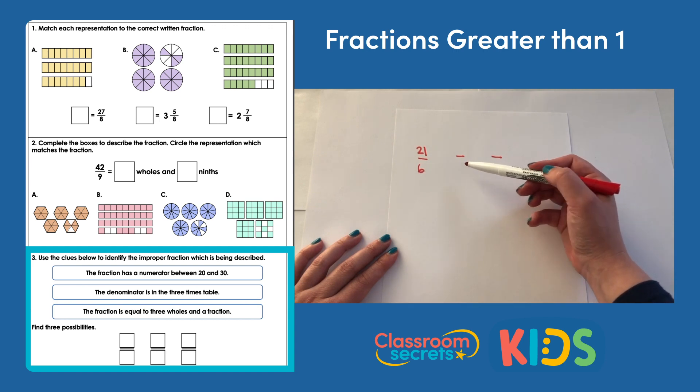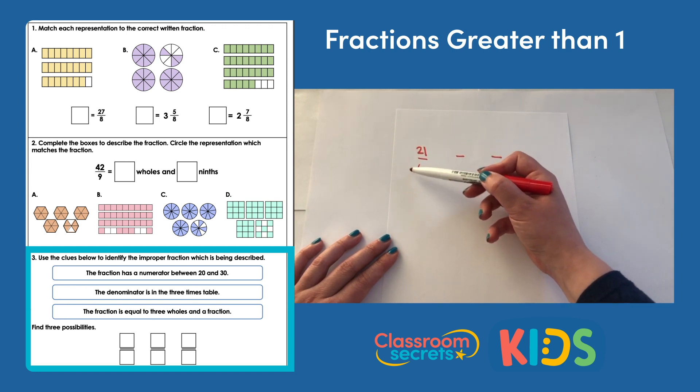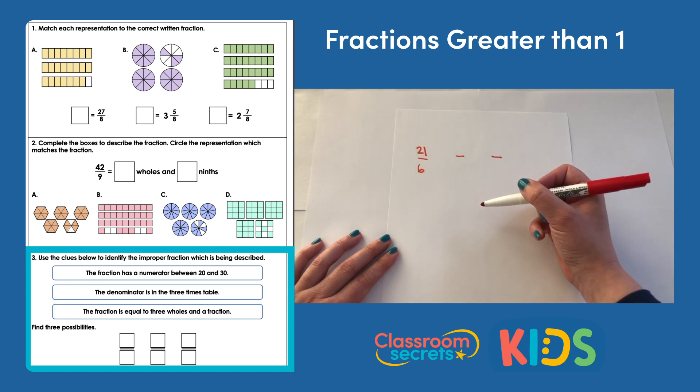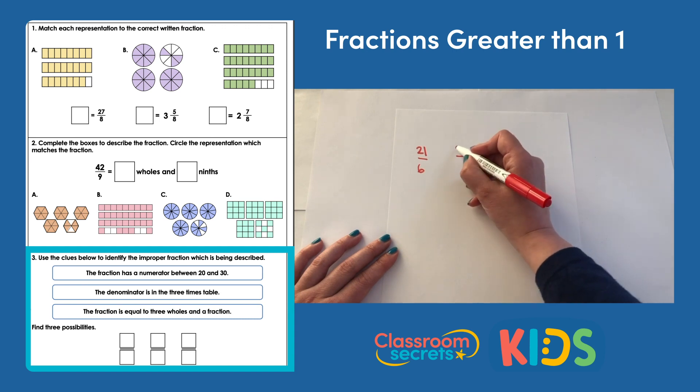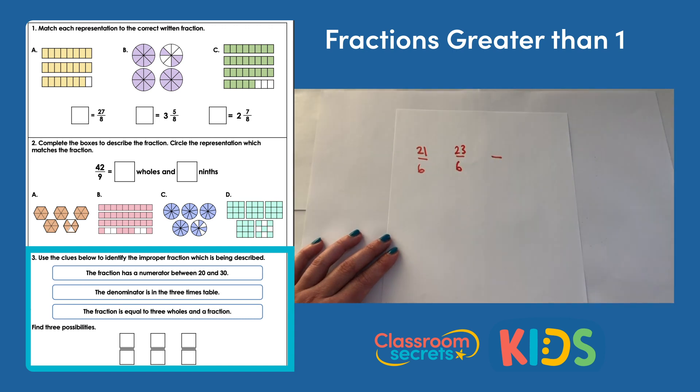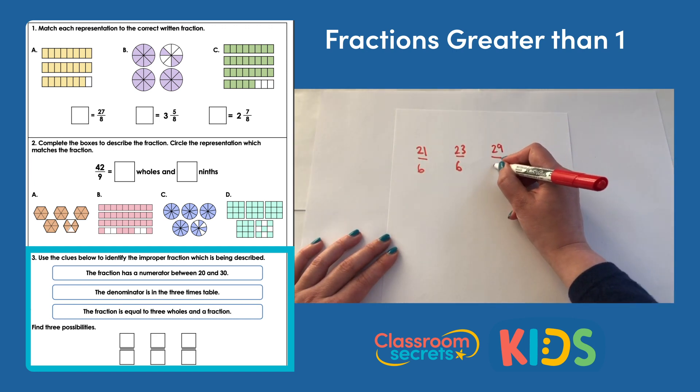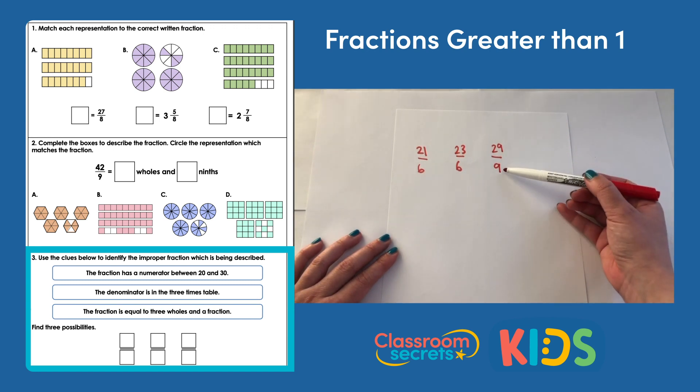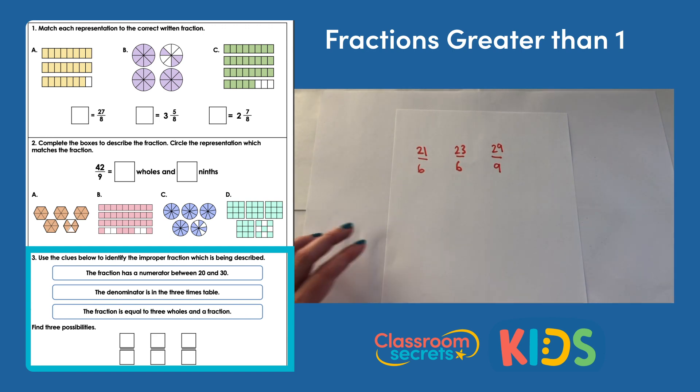For my next option, I could then work with what I already have. I could add something onto this numerator to make a new fraction, as long as I don't go past 24, because that would be equivalent to four wholes. I could have 22 or I could have 23 sixths. For our next one, I might try a different denominator here. I could try ninths. Nine times three is 27, so I could have 28 or 29 ninths because that would be equivalent to three wholes and two ninths, so that would fit all three criteria.